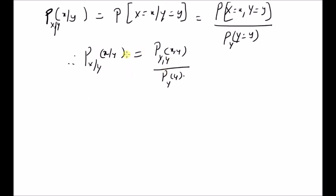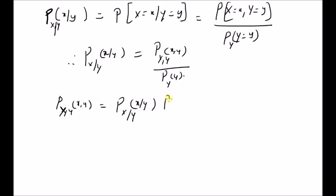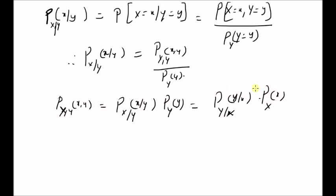As a consequence of this definition, we can clearly see that the joint probability mass function P_{X,Y}(x,y) is equal to the product of the conditional probability mass function and the marginal probability mass function. It is also equal to P_{Y|X}(y|x) multiplied by the marginal PMF of x. This is also related to the Bayes rule.